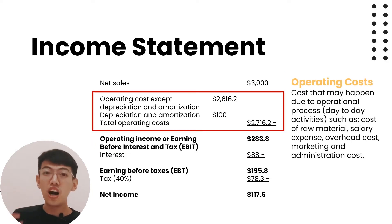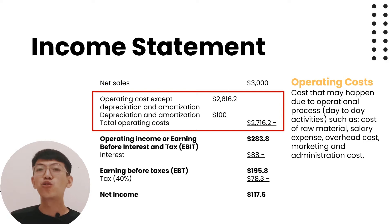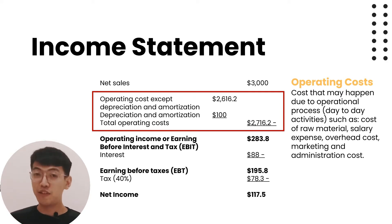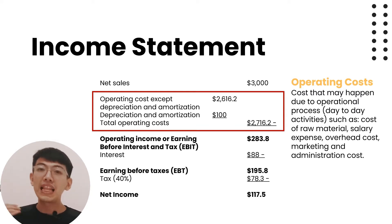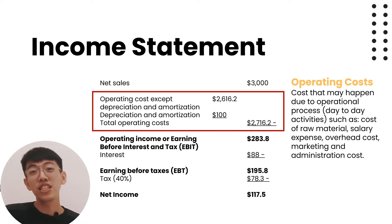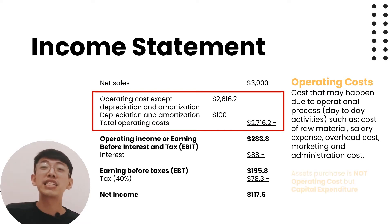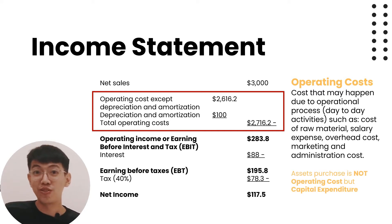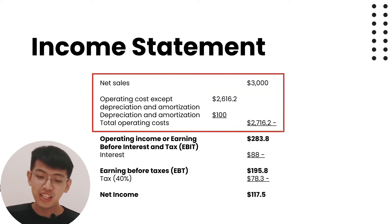Operational cost is the cost that may happen due to operational processes or day-to-day activities, such as cost of raw materials, salary expense, overhead costs, marketing, and administration costs. If a company purchases an asset, it is not an operational cost but capital expenditure. In this case, the net sales is three thousand dollars.